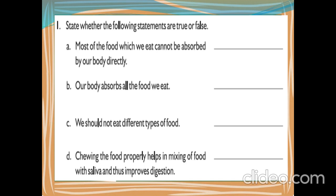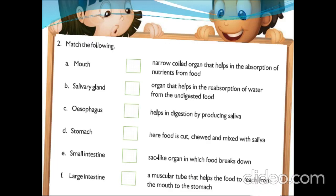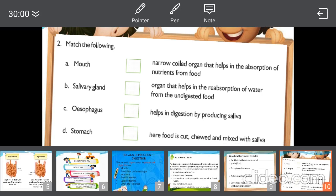Next, match the following: Mouth — used to cut, chew, and mix food with saliva. Salivary glands — help in the process of digestion by producing saliva. Esophagus — a long muscular tube that helps food reach from the mouth to the stomach. Stomach — a sac-like organ in which food breaks down. Small intestine — a narrow coiled organ that helps in absorption of nutrients from food. Large intestine — organ that helps in reabsorption of water from undigested food.